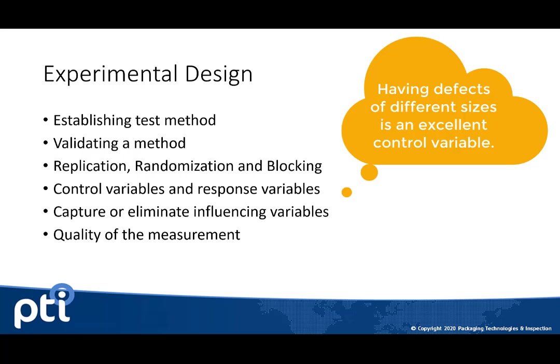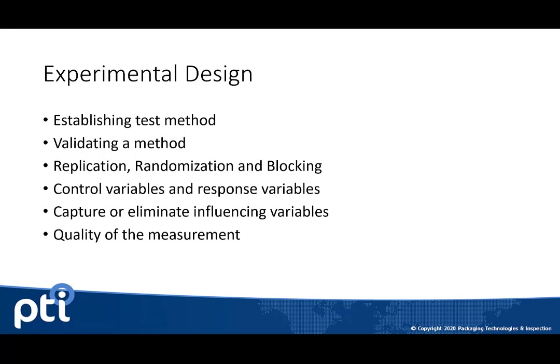You have them controlled. In that experimental design, we're really just isolating some of the input factors or control variables, and we're creating that population of good samples and defective samples, and we're going to collect that data independently and compare it. Whereas if we're validating the method, you typically would want a randomized sample set, and the test results will identify what is good and bad. How you lay out that experimental design very much depends on what your goal is with the data.